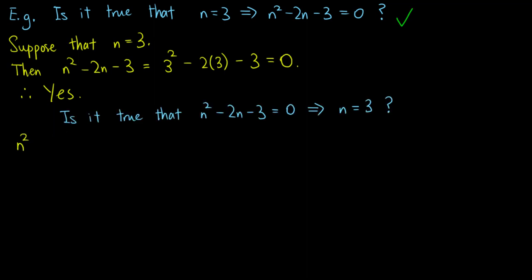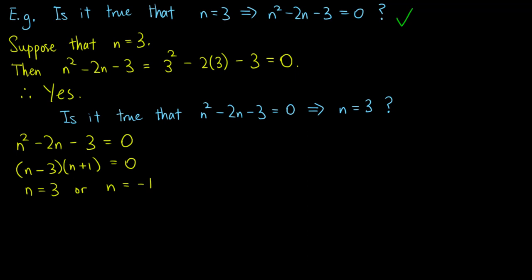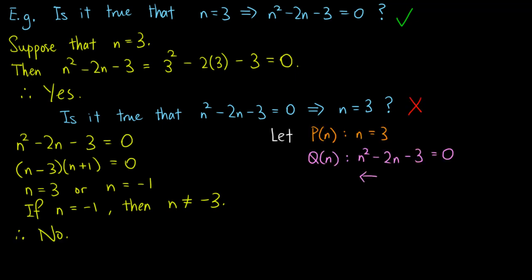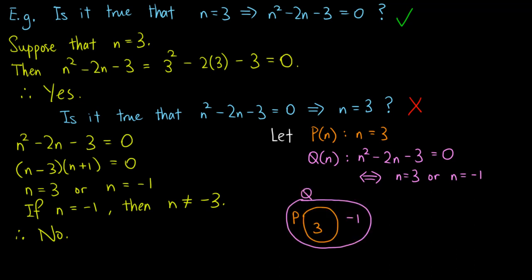Let's also consider the converse. Suppose n squared minus 2n minus 3 equals 0; we solve this quadratic equation to get n equals 3 or n equals negative 1. Since we have the possibility that n equals negative 1, we can't say that n equals 3. So the implication is false. We may let P and Q be the two predicates, where Q is equivalent to 'n equals 3 or n equals negative 1.' So we write 3 inside P and negative 1 outside P, with the whole thing being Q. Now it is easy to see that P implies Q, but Q does not imply P.